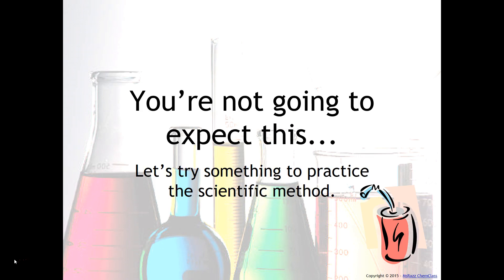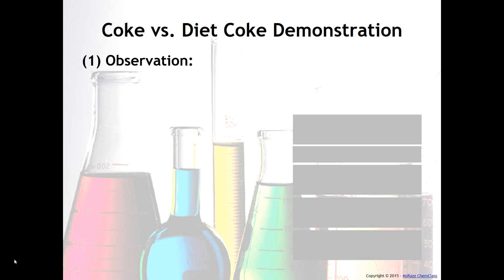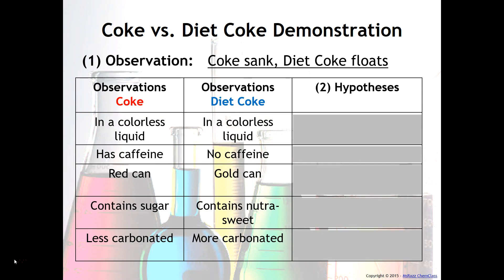Now in class, I showed a demonstration — and your teacher most likely showed a demonstration — of Coke versus Diet Coke. Here are the results, summarized using the scientific method. The first step is observation: we observed that the Coke sank and the Diet Coke floats. We noted that both were in a colorless liquid, that the Coke has caffeine while the Diet Coke has no caffeine. These are all observations.